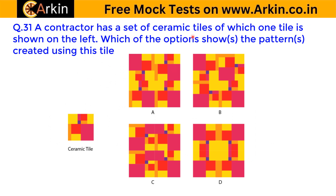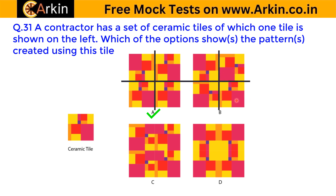A contractor has a set of ceramic tiles, of which one tile is shown on the left. Which of the options shows the pattern or patterns created using this tile? For making a pattern with a tile, you have to remember: tiles can only be rotated, they cannot be flipped. Keeping that in mind, if I draw lines like this and match, it's clearly matching — this is the same pattern, this is also the same pattern, and this one is rotated. So A will be correct. Now again if I draw a line — in an exam you have to do it visually — and if we try to match: this is the same one, this is rotated, this is also rotated, and this is also rotated. So this is again correct.